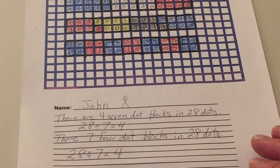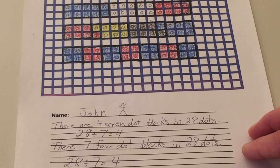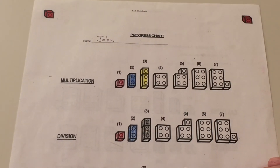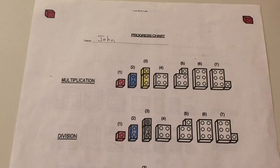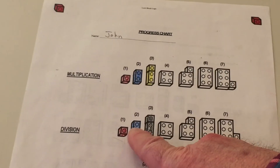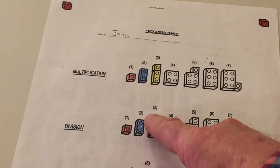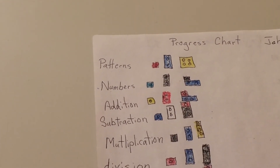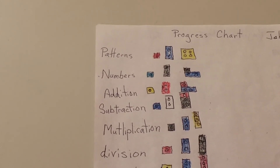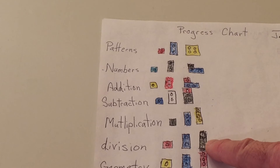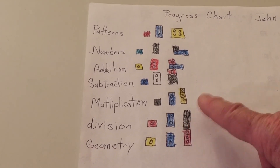Nice job everybody — I think you're starting to understand how numbers go together. Good job. And now let's see how we marked our progress chart. Remember, you can download the progress chart from the links below, and you can also download the graph paper from the links. So we did activity number three — I colored this one in division. I made a mark here for activity three and colored it black.